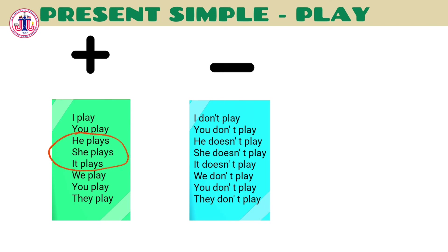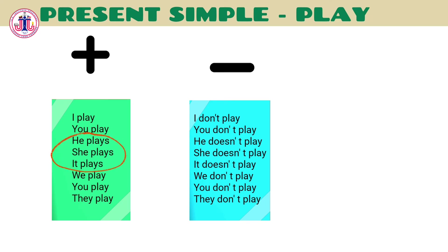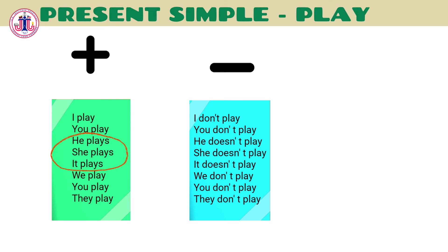For making sentences in the negative form, we use the auxiliaries 'don't' and 'doesn't': I don't play, you don't play, he/she/it doesn't play, we don't play, you don't play, they don't play.